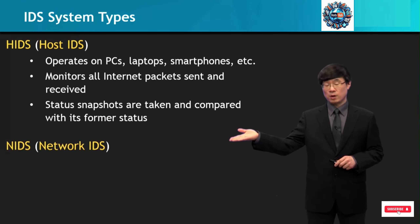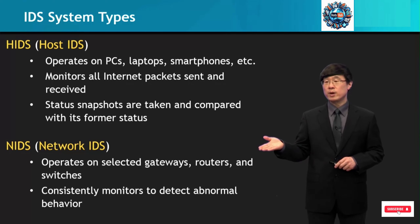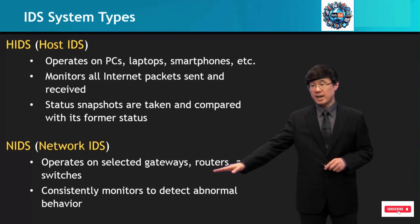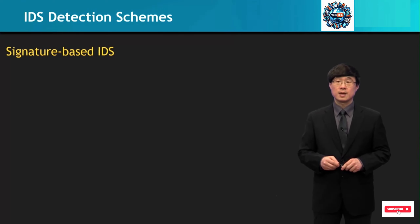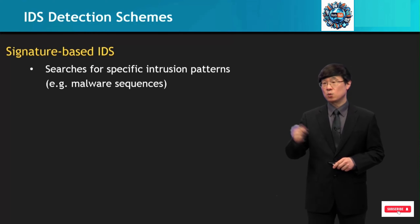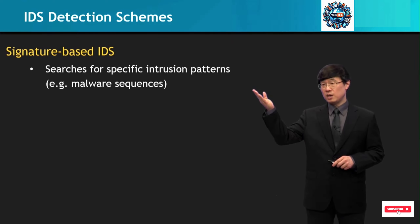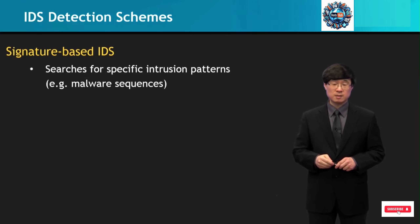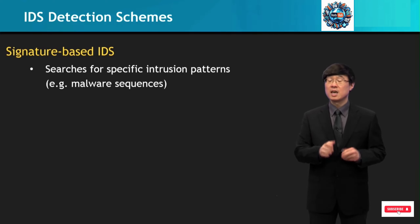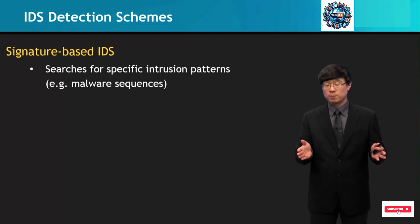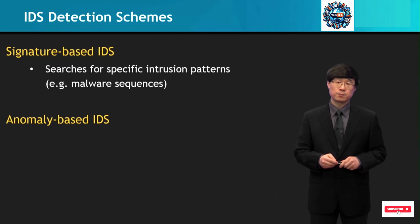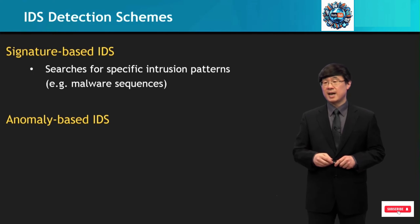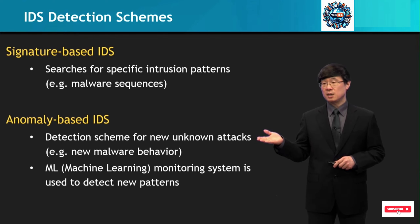Next is network IDS. This operates on selected gateways, routers, and switches, and it consistently monitors and detects abnormal behavior. The next is signature-based IDS, where this searches for specific intrusion patterns, such as malware sequences that are very difficult to detect individually, but more detectable when you detect a typical pattern or sequence.